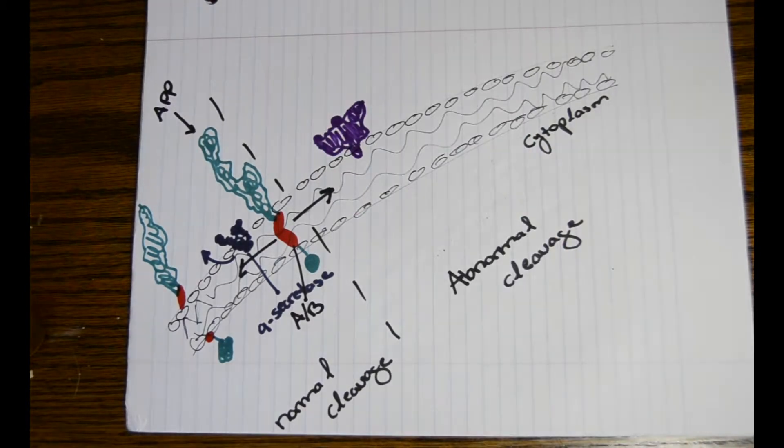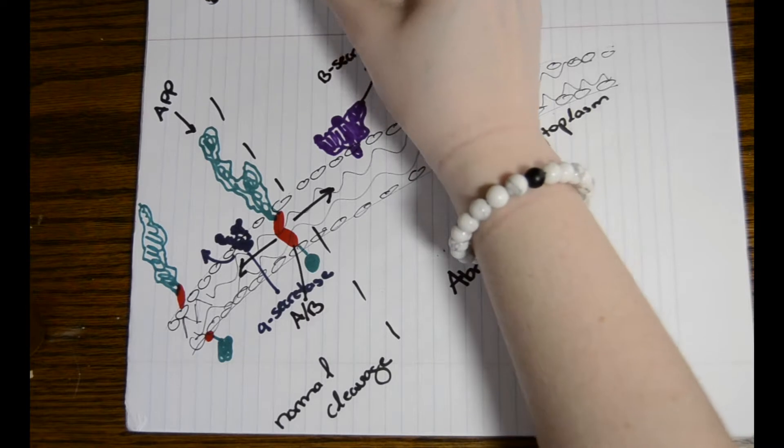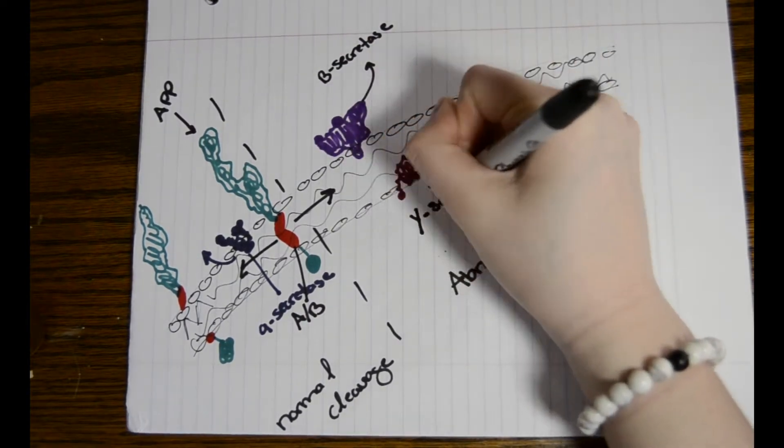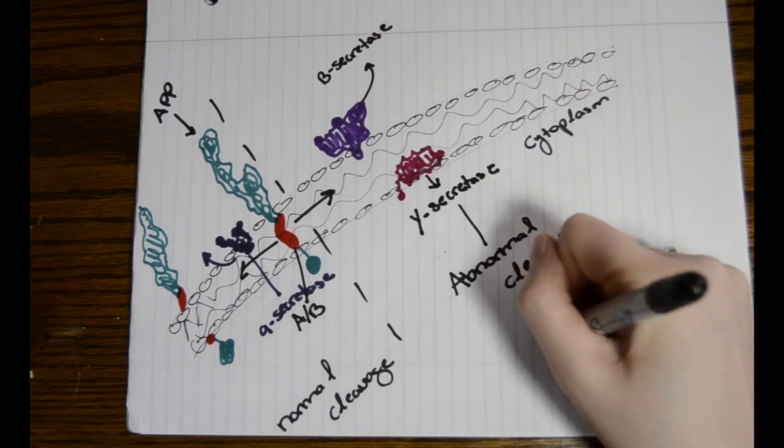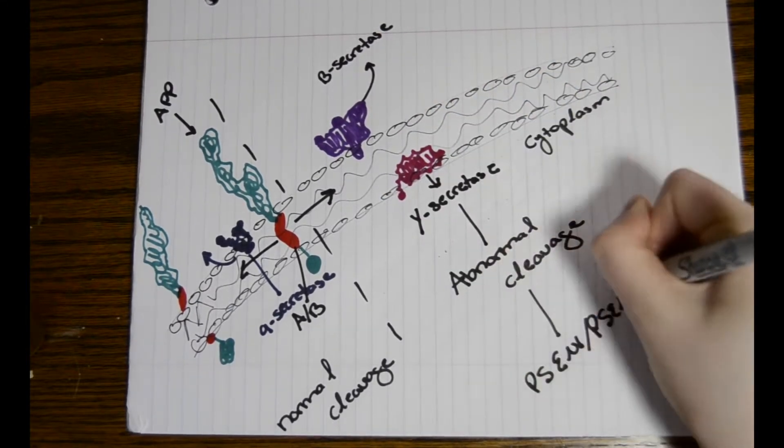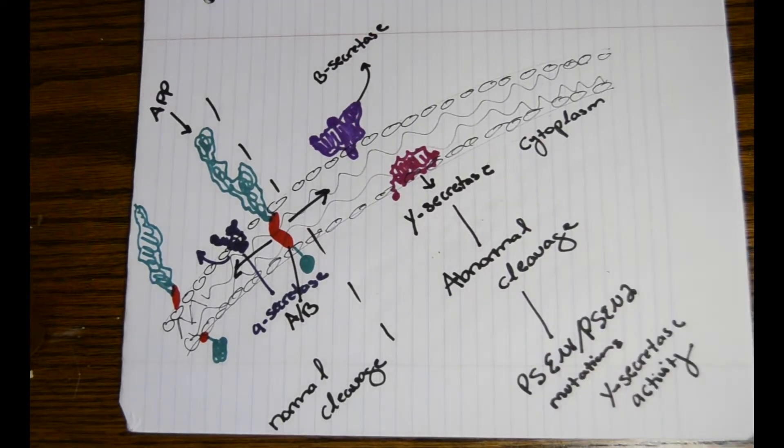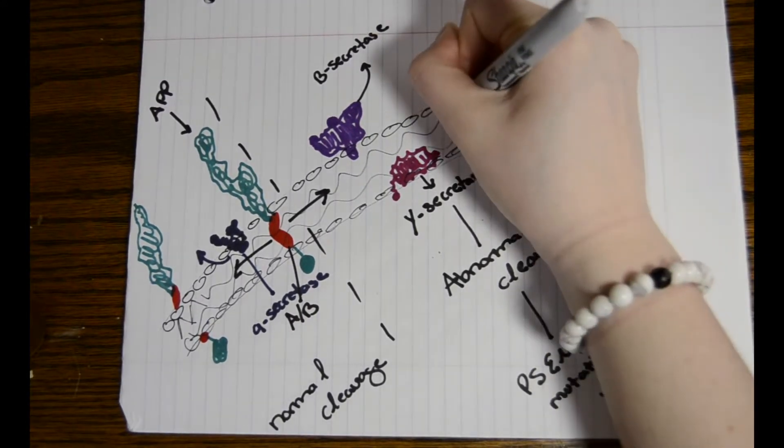On the right side, the amyloid beta peptide is cleaved by beta-secretase and gamma-secretase. Gamma-secretase has PSEN1 and PSEN2 mutations, which causes abnormal cleavage, such that the amyloid beta peptides cleave off of APP.